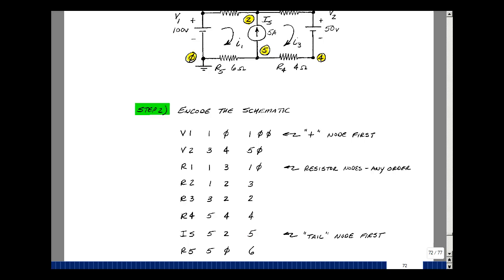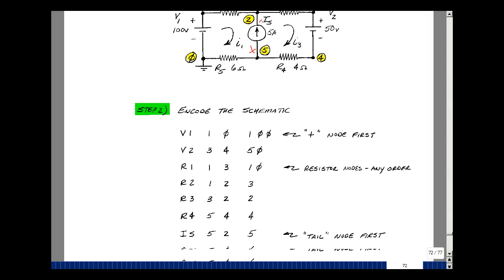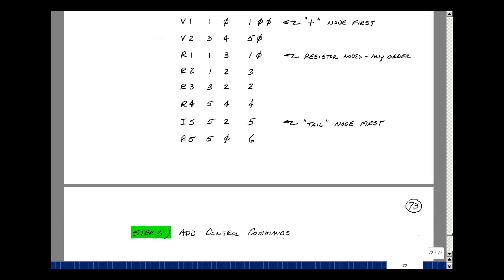There's also a current source in this problem between two nodes. SPICE considers every component to be passive. Given the current is in this direction, the default notation is that this is the plus terminal and this is the minus terminal. So we'll give the first terminal as 5 and the second as 2, with a value of 5 amps. That's how we would encode a schematic in PSPICE.